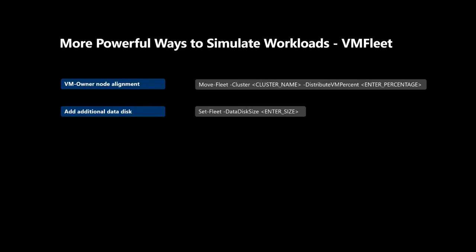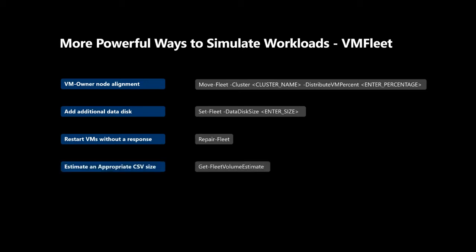The second new feature is that VMFleet now lets you create an additional data disk on a virtual machine in addition to the default OS disk. This is a new flag called data disk size inside the Set-Fleet command, which originally allows you to change VM characteristics like memory and vCPU. Third, we have a new set of commandlets that let you check virtual machine health status. One of the more notable ones is Repair-Fleet, which automatically restarts virtual machines not responding to pause and go actions. And finally, we have Get-FleetVolumeEstimate, which helps you estimate and calculate the cluster shared volume size you should create before running a VMFleet test.